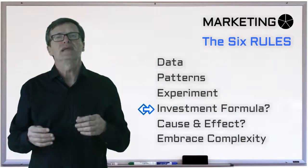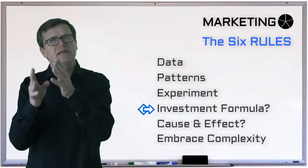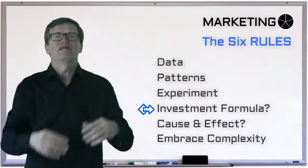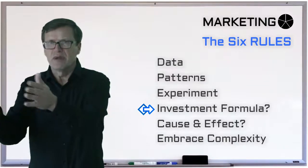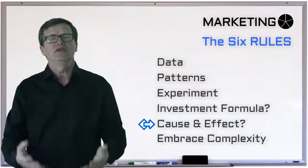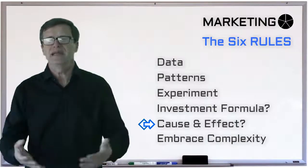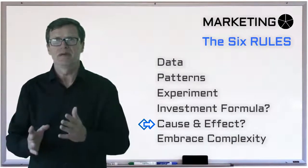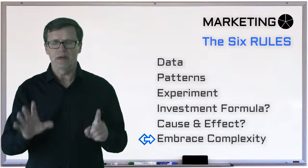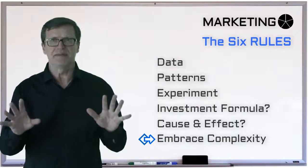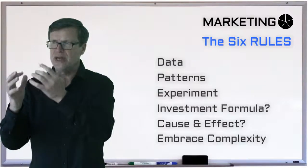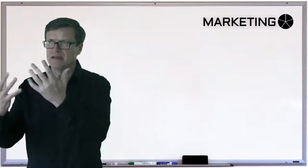Four: marketers need to create a formula to determine with confidence where to invest, the synergies, and how much to put into each area relative to the others over a period of time. Five: marketers need to be sure that the formula explains and predicts the outcome — the cause and effect. And finally, number six: marketers need to accept complexity, especially because of the growth in multi-channel and omni-channel marketing in the future.